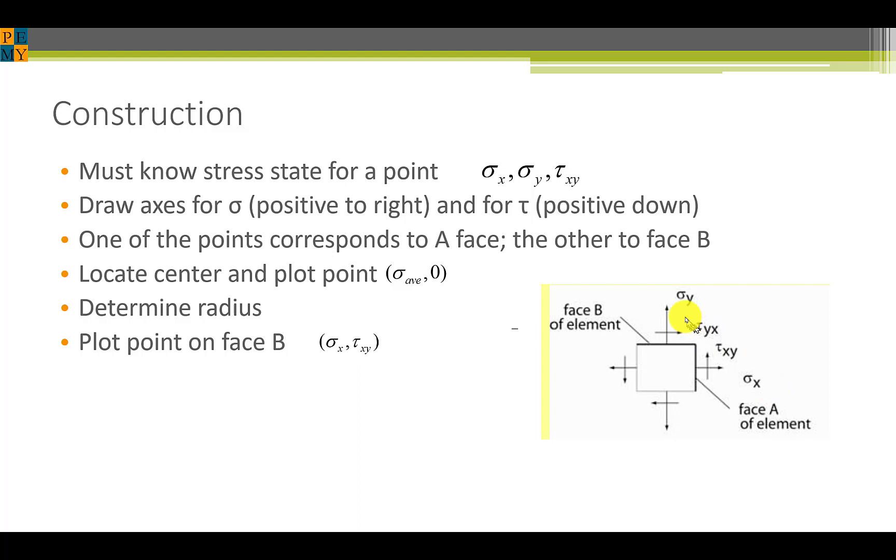One of the points corresponds to the A face shown here and the other point orthogonal to it to the B face here. So sigma x here, sigma y here. This stress element is not necessarily lined up with the principal planes and that's why we like to rotate the Mohr's circle to find those maximum principal stresses. We locate the center and plot sigma average zero. We determine the radius as we discussed and then we can plot a point on face B, sigma x and sigma y. Next time we'll do a few examples by hand and reinforce the ideas we presented here.